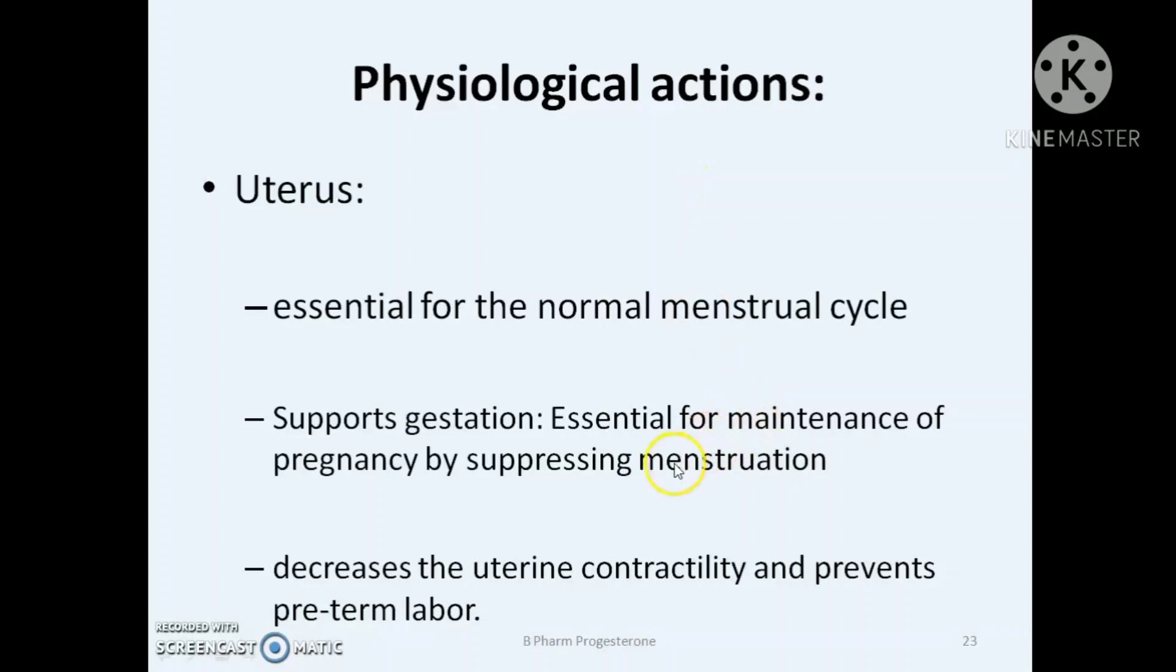Next are the physiological actions of progesterone. Progesterone acts mainly on uterus. It is a female sex hormone essential for normal menstrual cycles. Second important action is that it supports gestation, essential for the maintenance of pregnancy by suppressing menstruation. It also decreases the uterine contractility and prevents preterm labor. They are essential for embryogenesis of humans and other species.